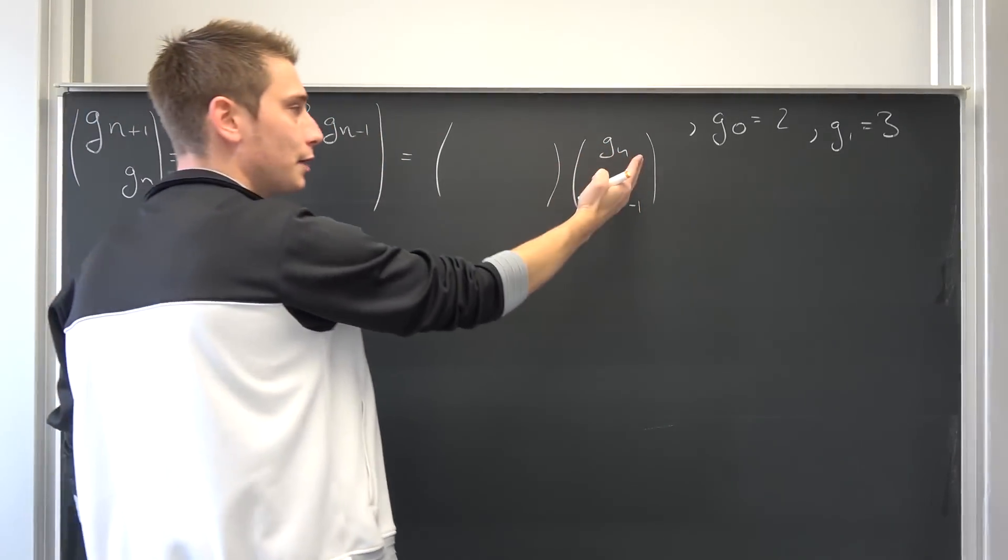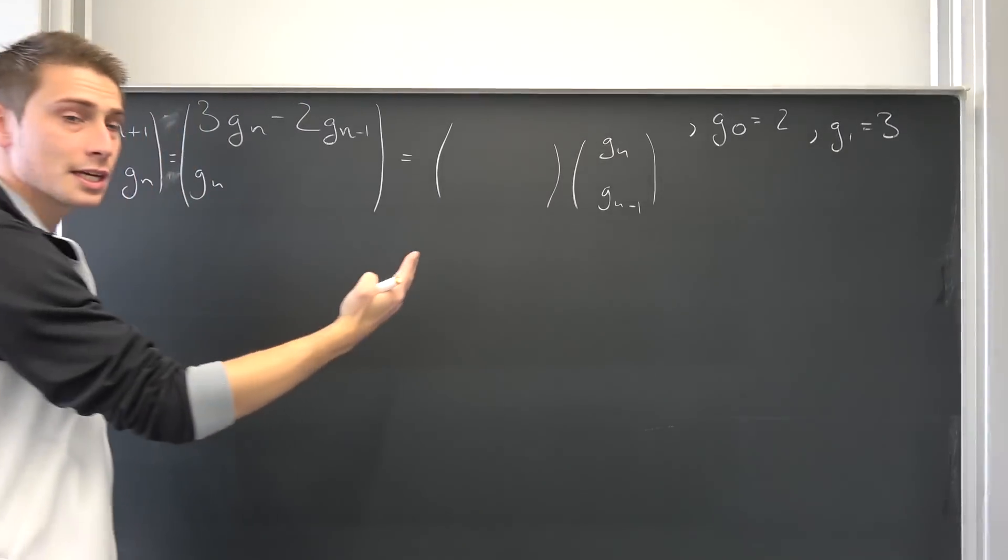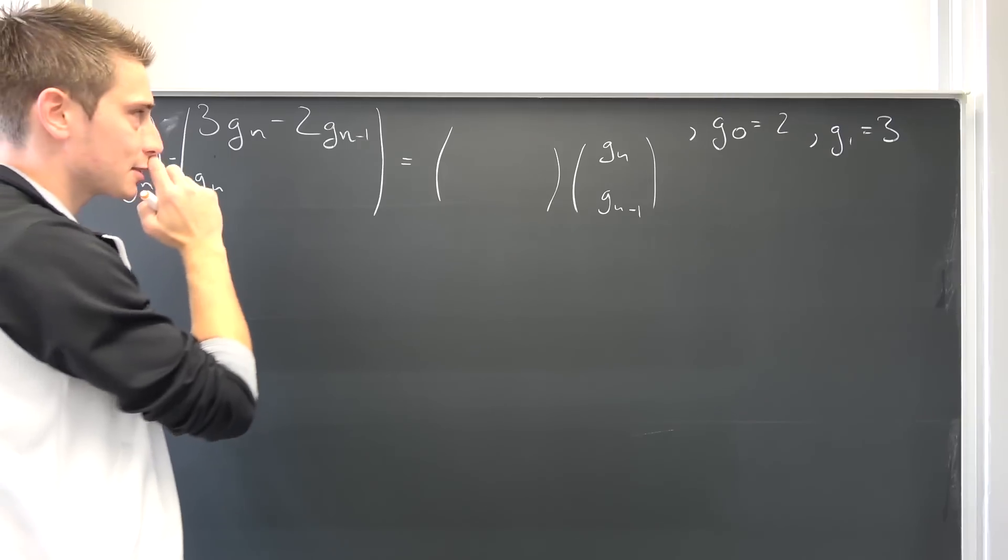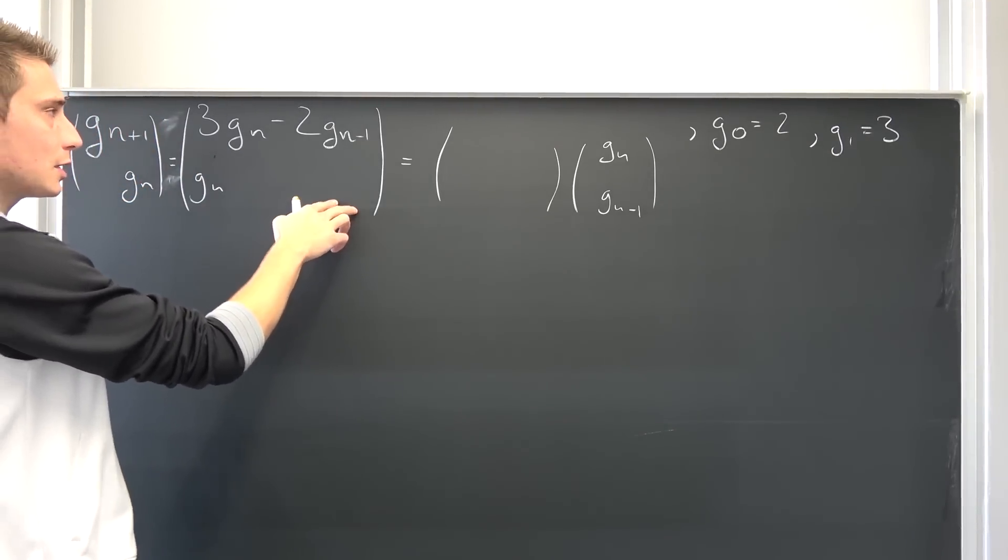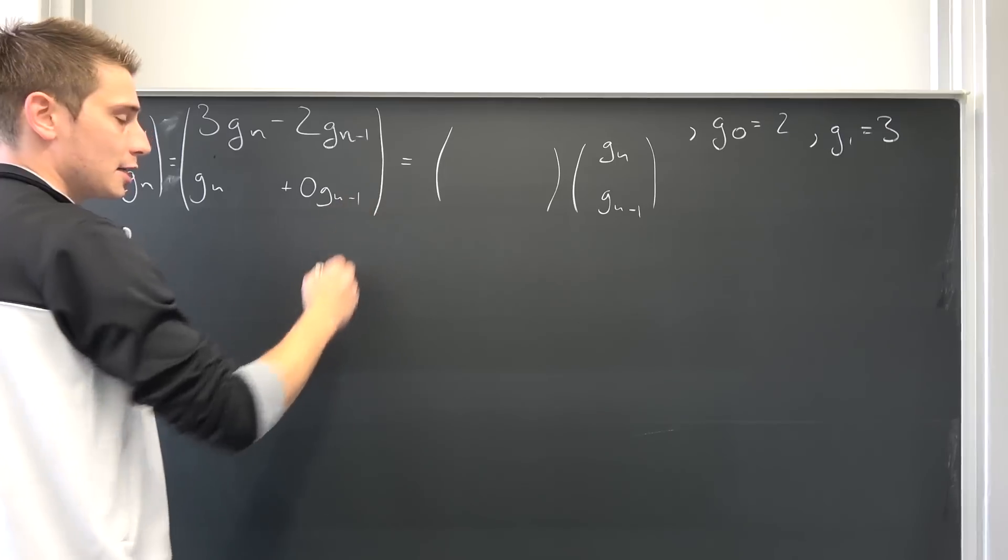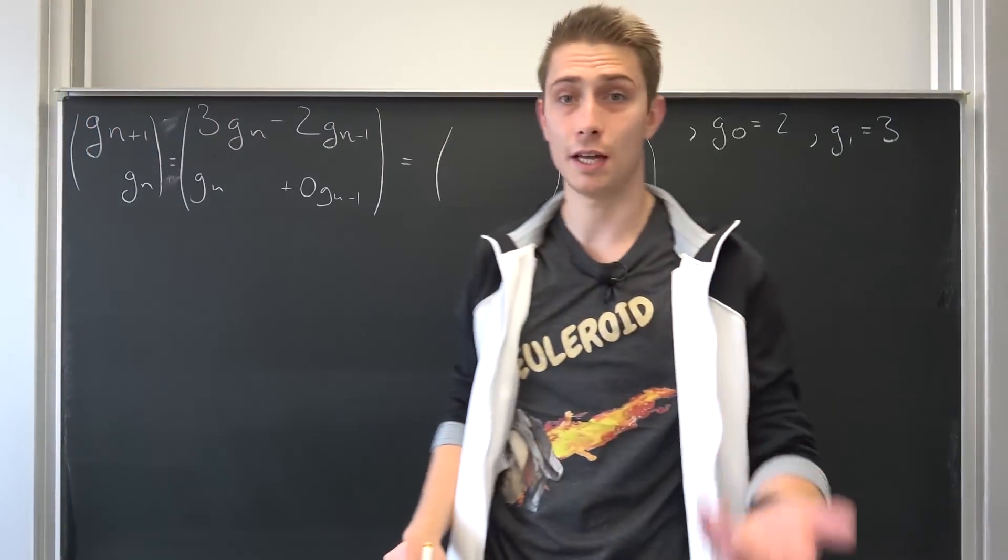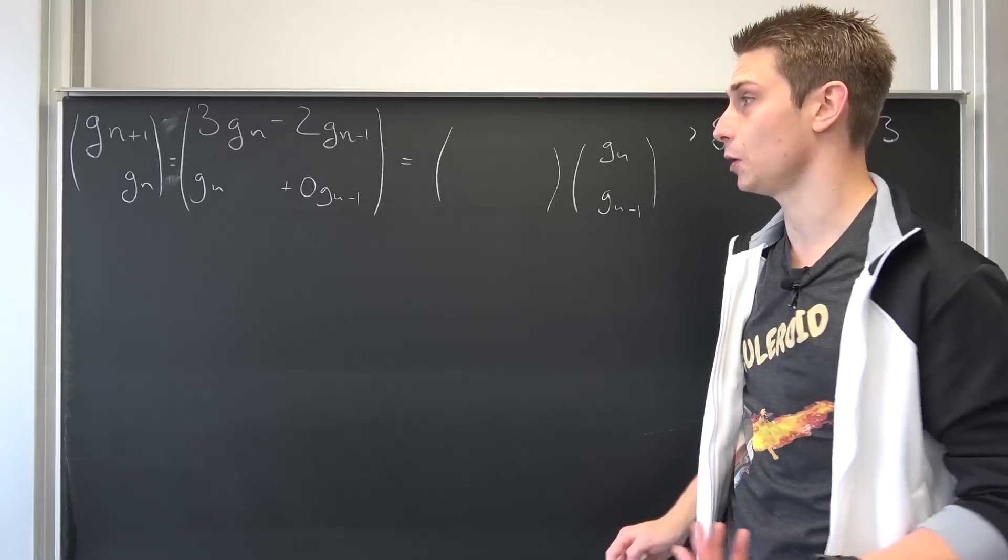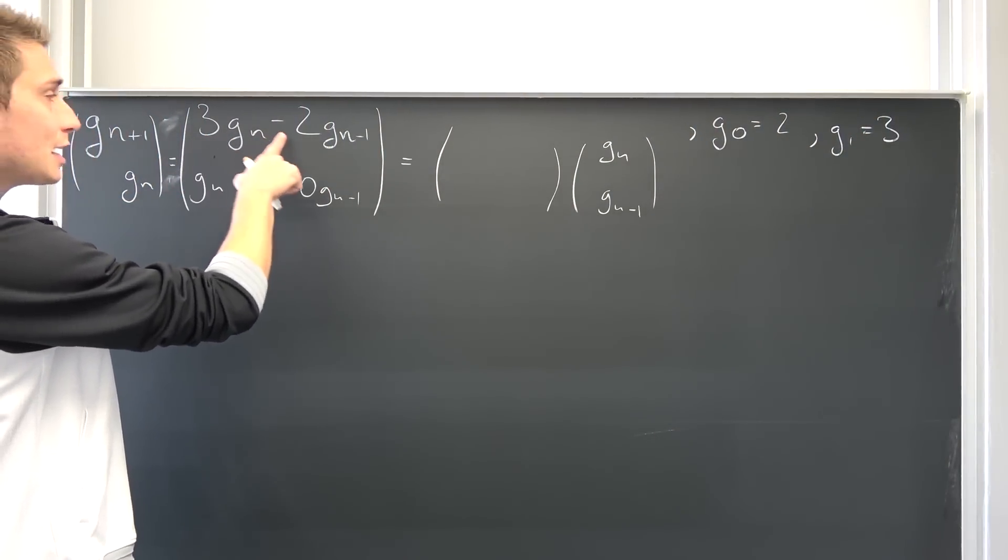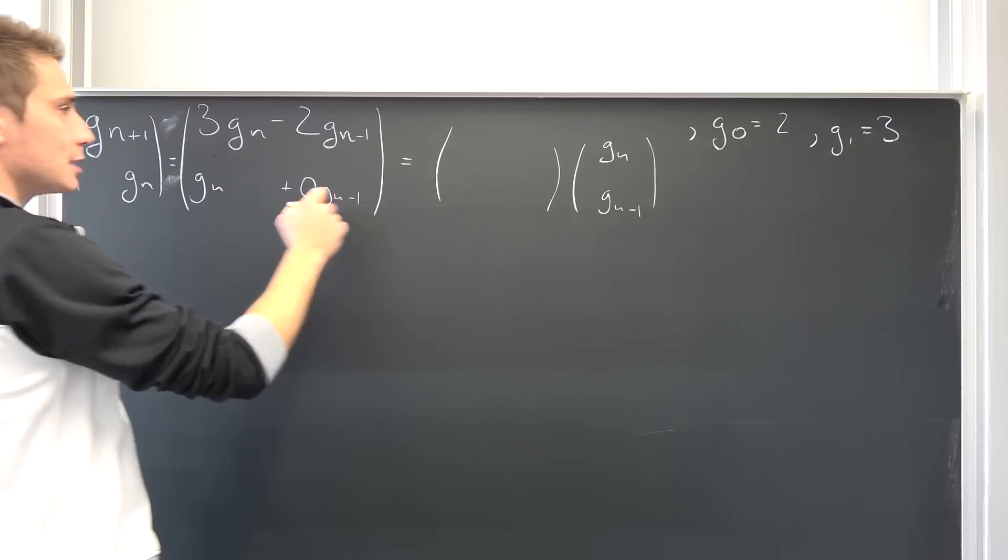Because if you multiply a 2 by 1 vector with a 2 by 2 matrix, you are going to end up with a 2 by 1 vector. But now you might ask yourself, well, we don't have a g_n-1 down here. Well, we actually do: plus 0 times g_n-1. So if you don't have any apple, then you don't have any apple. It does make sense. Meaning our coefficients for our transformation matrix are actually 3, negative 2, 1 and 0.